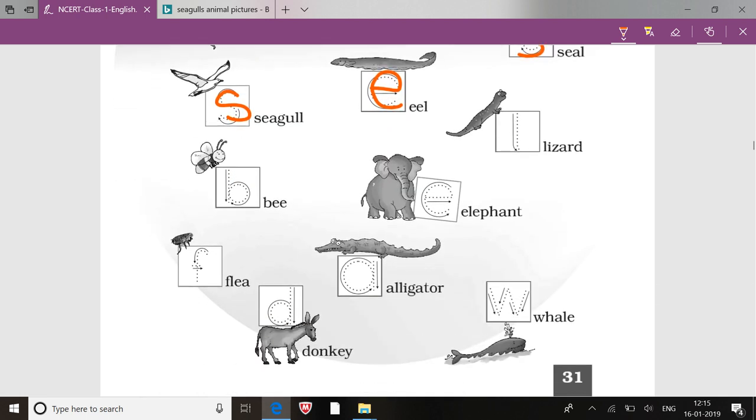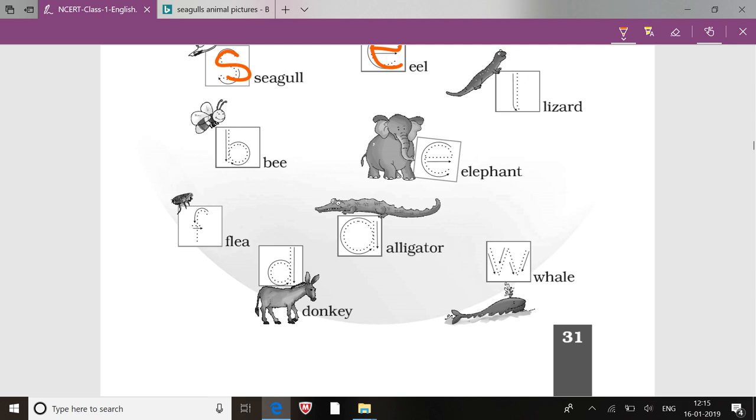L for lizard, E for elephant, B for bee, F for flea, D for donkey, A for alligator, W for whale.